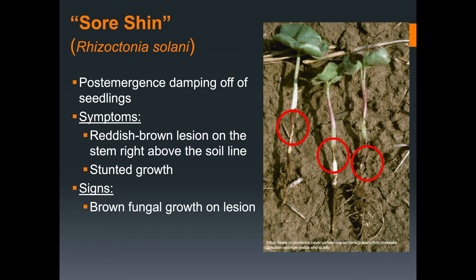Sore shin is caused by Rhizoctonia solani. This pathogen is most commonly associated with causing pre-emergent damping off, which means that the seedling dies before emerging past the soil line.